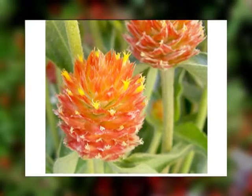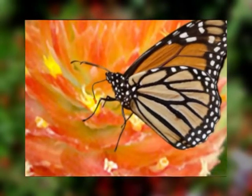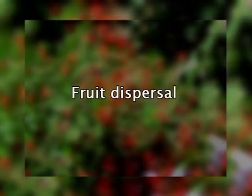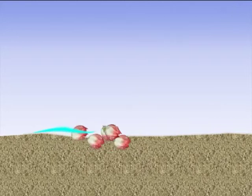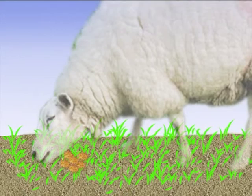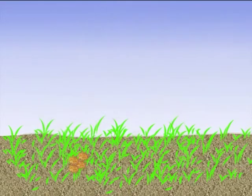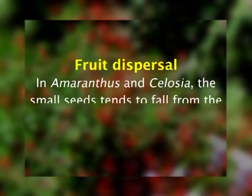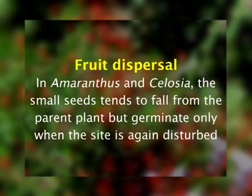The usually small, densely clustered flowers of Amaranthaceae are pollinated by either wind or by various types of insects. Both selfing as well as outcrossing may occur. The small dry fruits or seeds, which are associated with accrescent and hairy perianth, are usually dispersed by either wind or water. A few species form a burr-like inflorescence that are externally transported by animals. In taxa like Amaranthus and Celosia, the small seeds tend to fall from the parent plant but germinate only when the site is again disturbed. Many seeds are also accidentally eaten and thus dispersed by browsing animals.